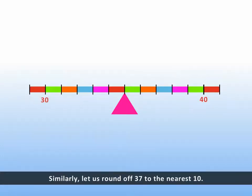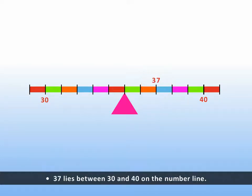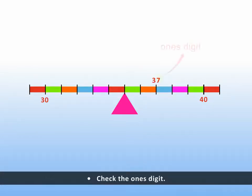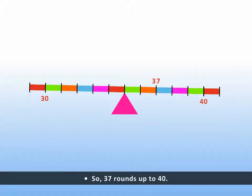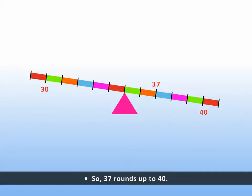Similarly, let us round off thirty-seven to the nearest ten. Thirty-seven lies between thirty and forty on the number line. Check the ones digit. Round up if it is five, six, seven, eight or nine. So thirty-seven rounds up to forty.